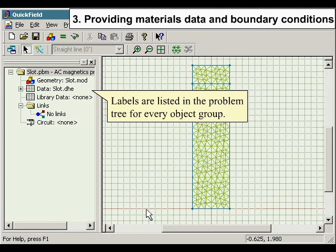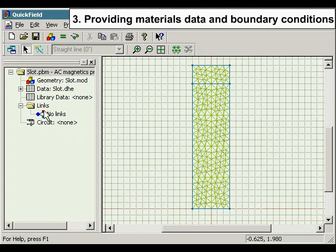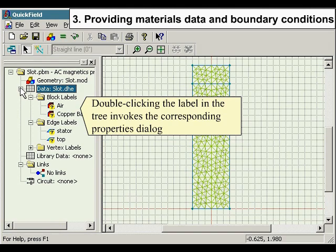Labels are listed in the problem tree for every object group. Double-clicking the label in the tree invokes the corresponding properties dialog.